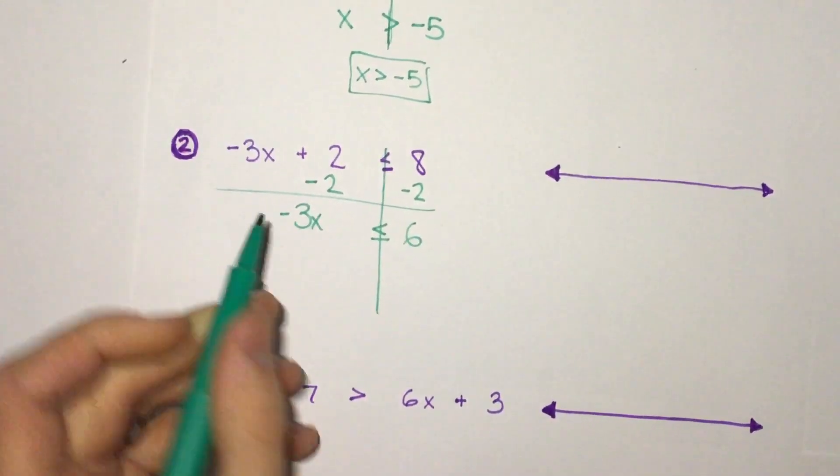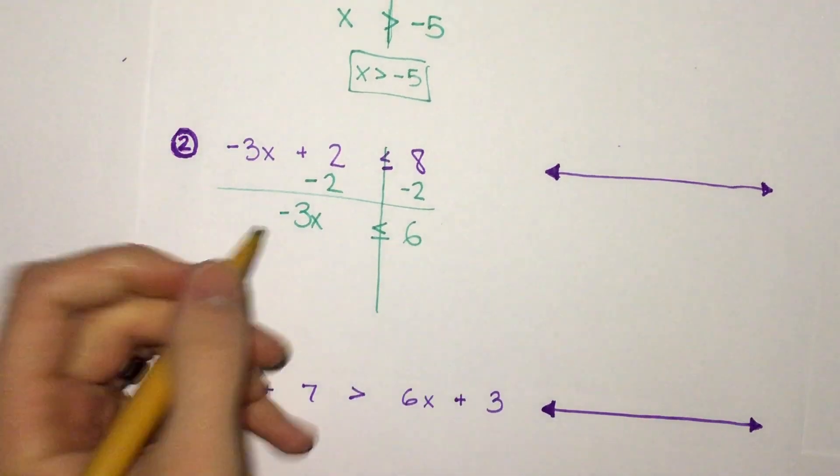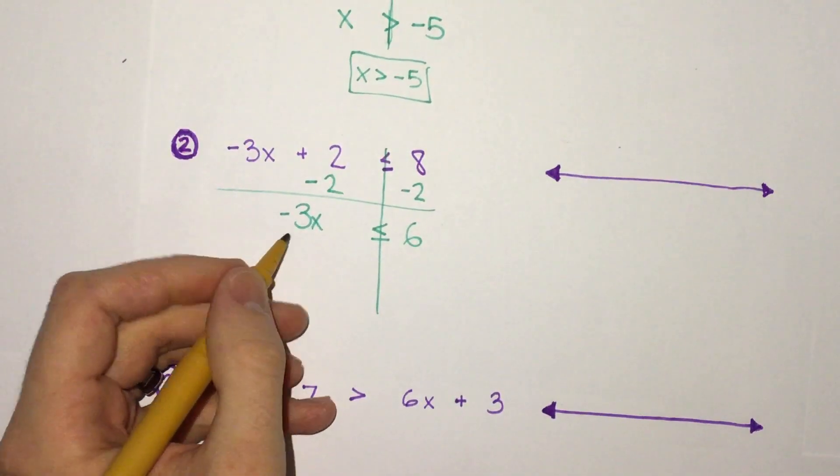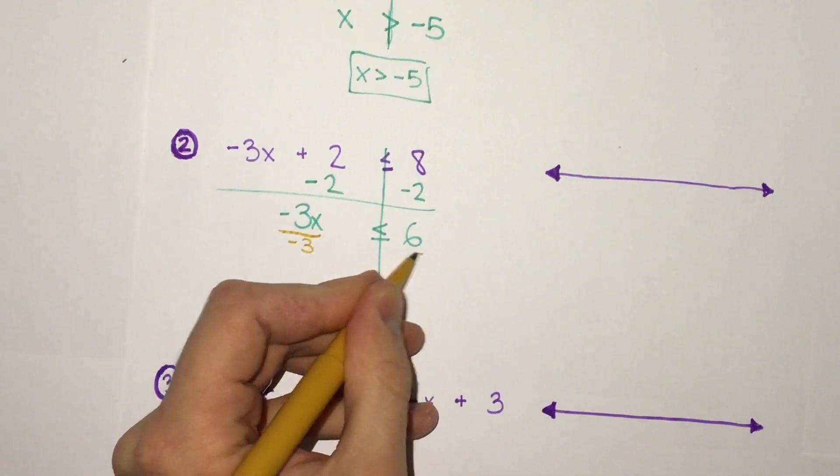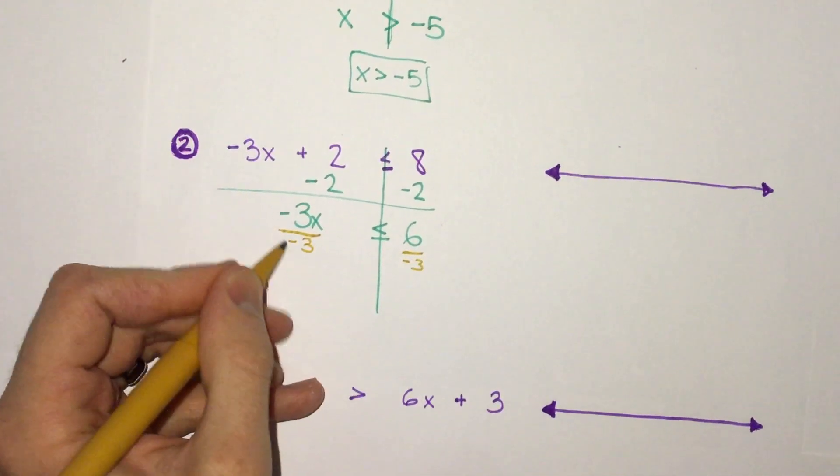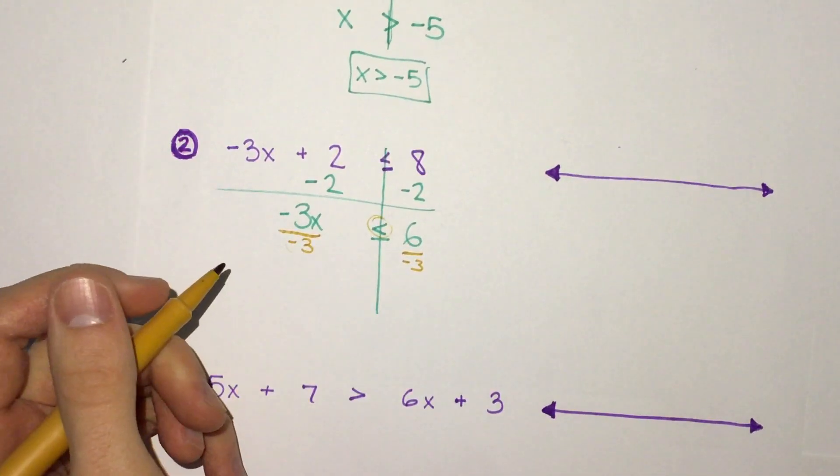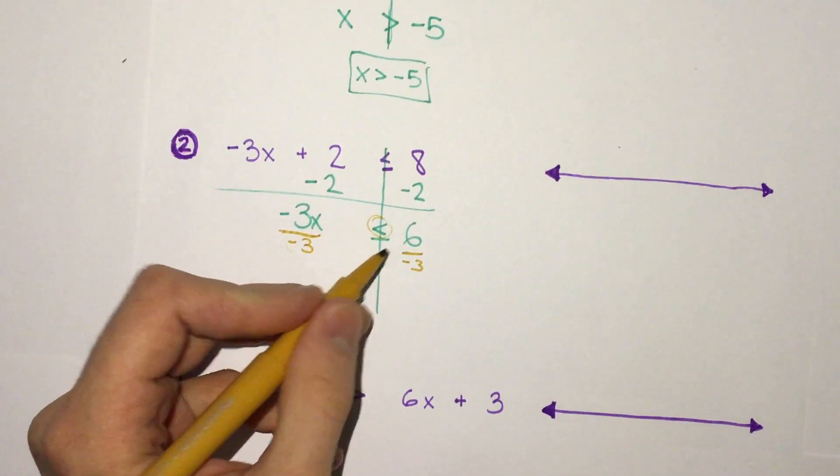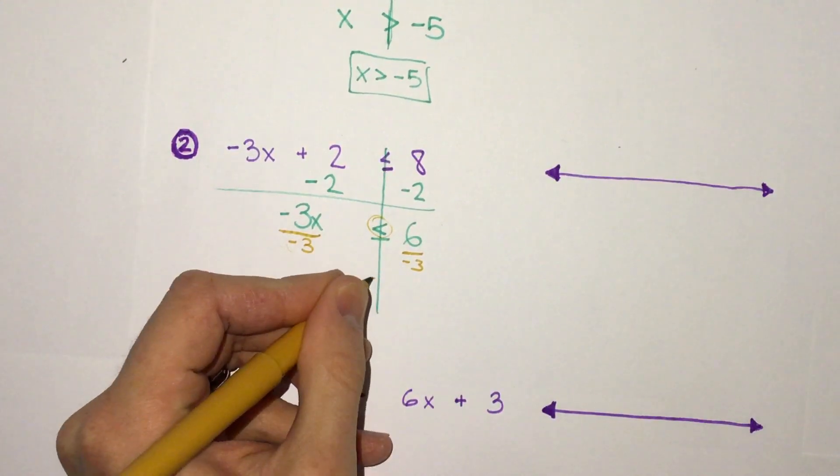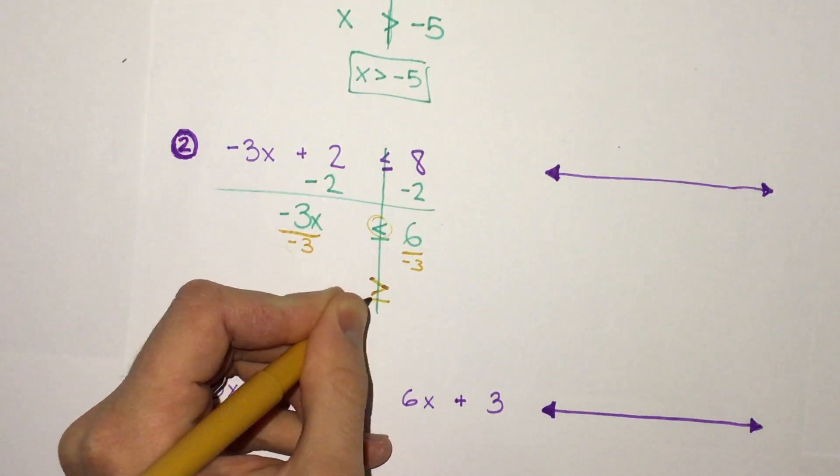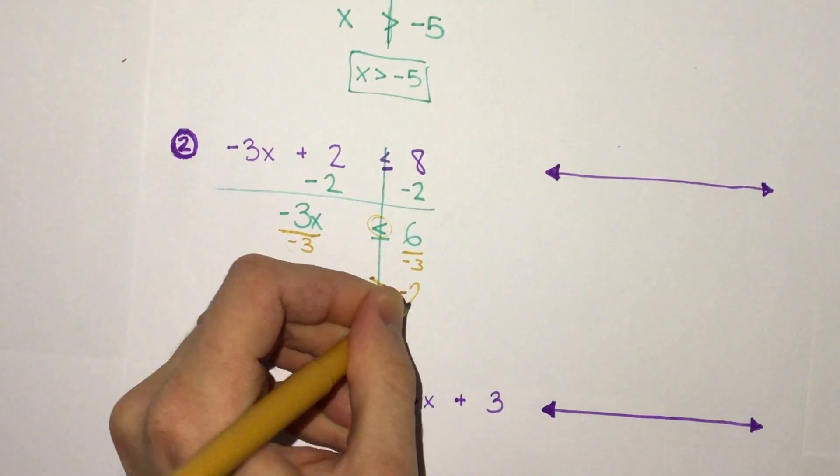Now this is where we run into a difference. Negative 3x, negative 3 times x, we have to divide by negative 3. When we divide by a negative number, we have to change our sign. What that means is we have to flip it. So instead of less than, because we divided by a negative number, we're going to change it to greater than or equal to. 6 divided by negative 3 is negative 2.